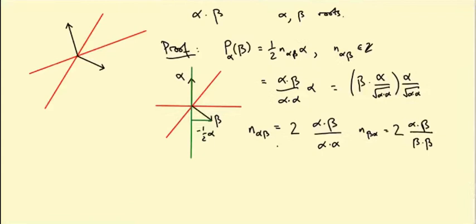If we multiply these two guys together, what we get is n_αβ · n_βα equals 4(α·β)²/[(α·α)(β·β)].